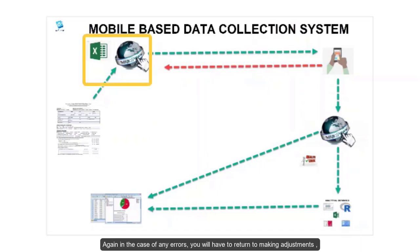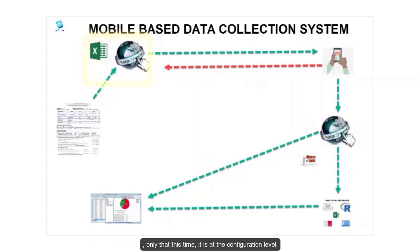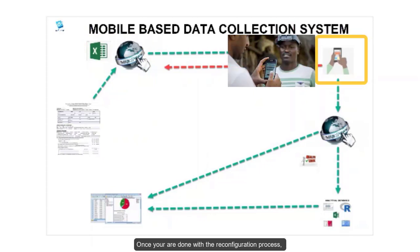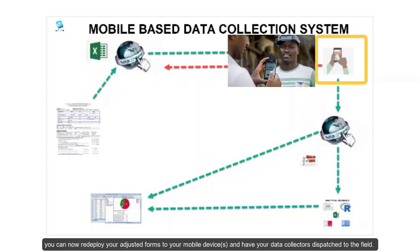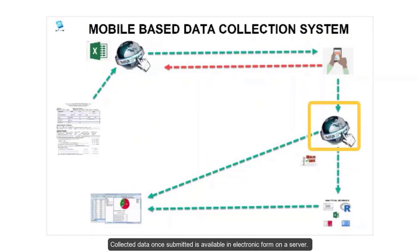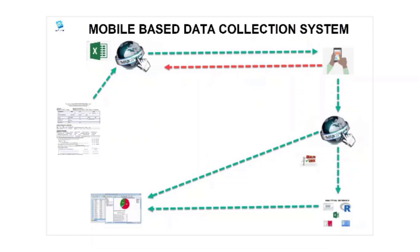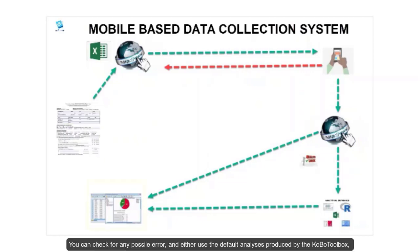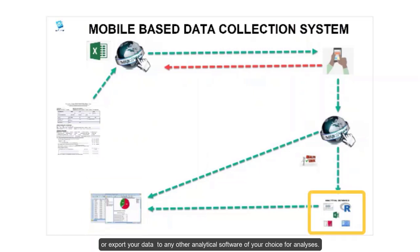Again, in the case of any errors, you will have to return to making adjustments, only that this time it is at the configuration level. Once you are done with the reconfiguration process, you can now redeploy your adjusted form to your mobile devices and have your data collectors dispatched to the field. Collected data once submitted is available in electronic form on a server, accessible only to you or any other person that has your password. You can then check for any possible errors and either use the default analysis produced by the Kobo toolbox or export your data to any other analytical software of your choice for analysis.